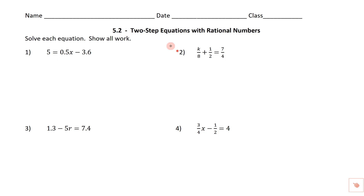Now that we've talked about solving one-step equations, we want to move on to solving two-step equations with rational numbers. These are going to have rational numbers, which means they're fractions or decimals. Decimals could be turned into fractions if we need to. The only reason we'd want to write the answer as a decimal is if the problem was written with decimals or if it was a story problem. If it's got a fraction or whole numbers, we write the answer as a fraction, and if it's got decimals, we write the answer as a decimal.